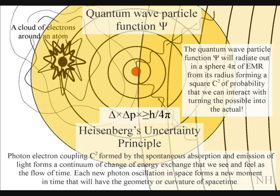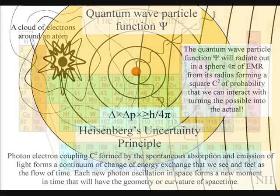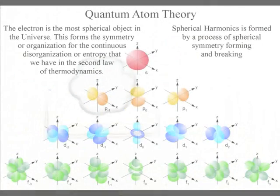We have new photon oscillations or vibrations continuously coming into existence relative to the atoms of the periodic table, forming what we measure as a period of time.